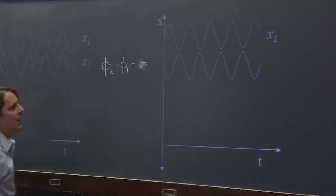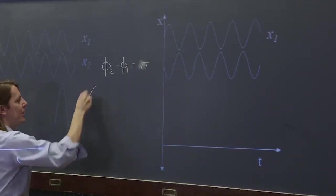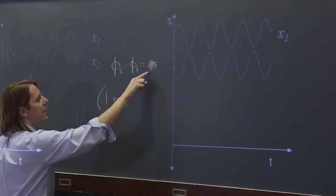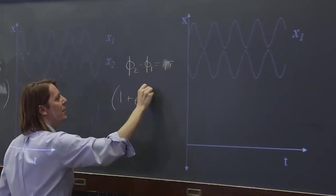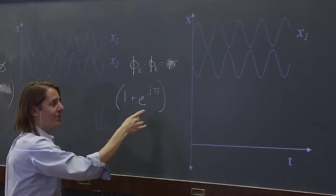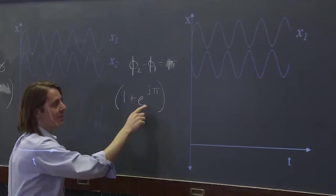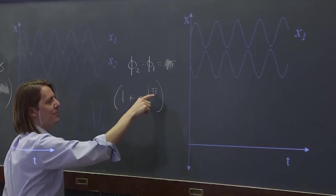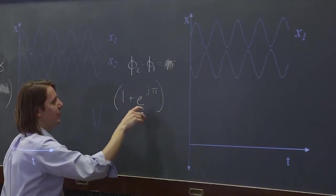180 degrees out of phase. And if you think about the phase part, it's 1 plus e^(jπ), e^(jπ). Well, we thought about what this is before when we were doing Euler's identity. This is equal to negative 1. Cosine of π, the real part is negative 1. Sine of π, the imaginary part, is 0.